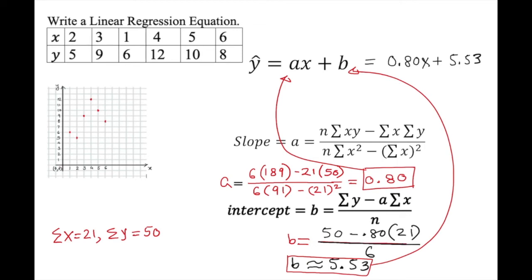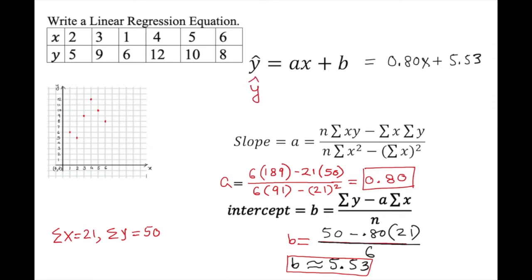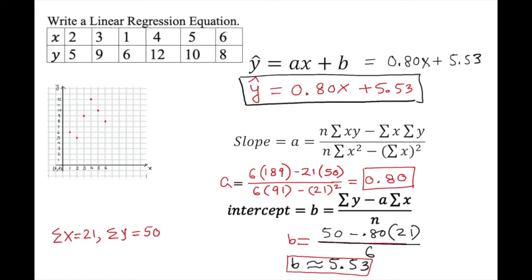Now we can write the regression equation: y-hat equals 0.80x plus 5.53. That is our regression equation. If we get many decimal places we can just round to two or three decimals.